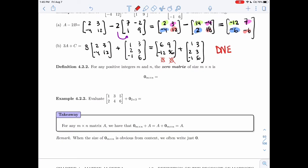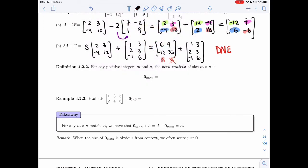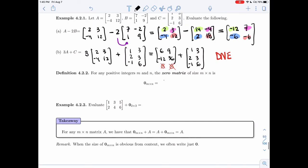All right, for any positive integers m by n, we're going to have a special zero matrix. And it's going to be the matrix where all entries will actually be equal to zero. So that means I have m rows and n columns and all entries are simply zero. Nothing but zeros in sight.